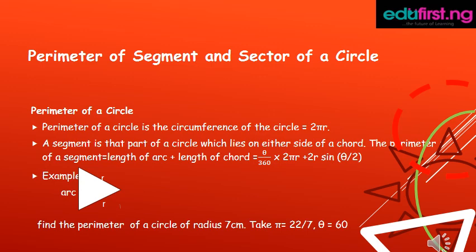We have an example on your screen. Find the perimeter of a circle of radius 7 cm. Take π is equal to 22/7.